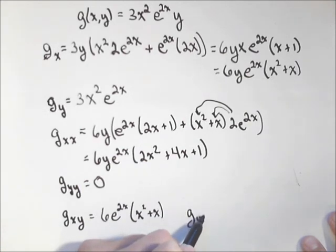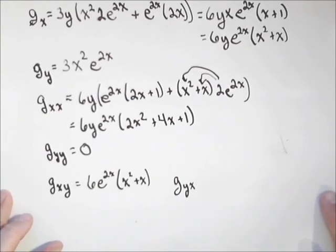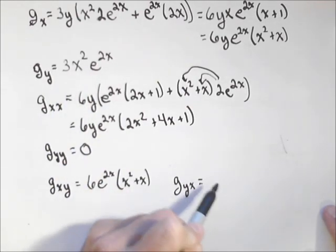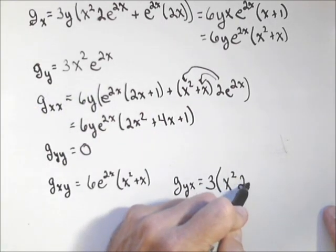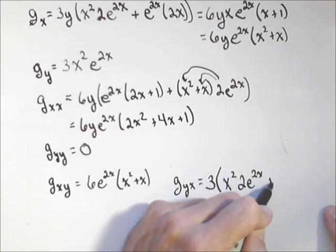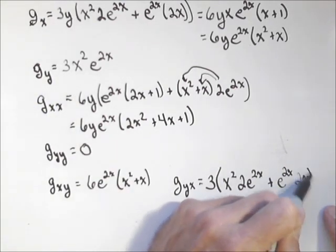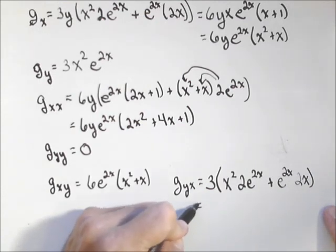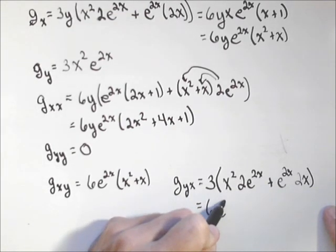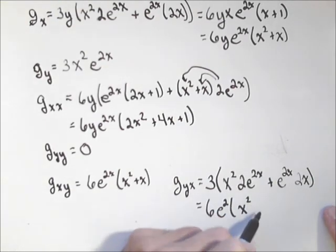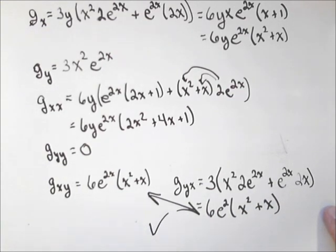Let's confirm this by doing g sub y with respect to x. Here's our g sub y — we're going to have another product rule. I've got three times x squared times the derivative of e to the two x, which is two e to the two x, plus hold the e to the two x constant times the derivative of x squared, which is two x. Factoring out what we can: pull out a two — that makes it a six — and pull out an e to the two x. What's left is x squared from the first term plus an x from the second. They check out — both mixed partials match.